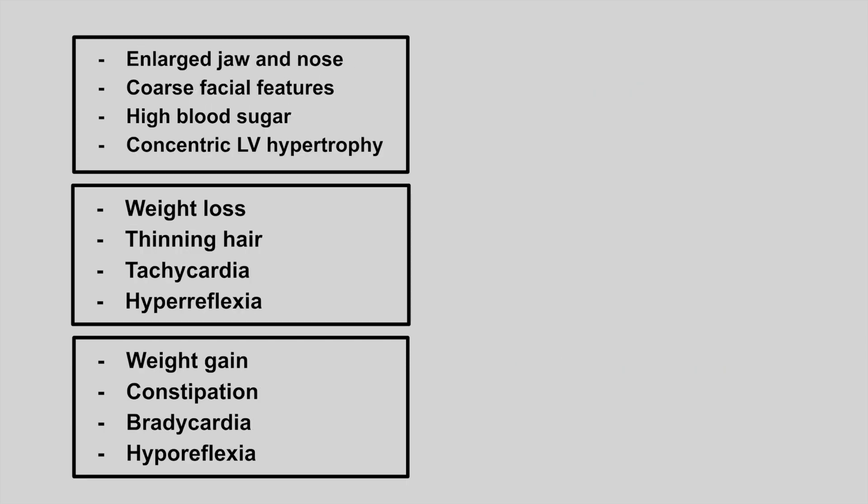The next patient has an enlarged jaw and nose, coarse facial features, high blood sugar, and concentric left ventricular hypertrophy. This is acromegaly, which happens due to too much growth hormone secretion. Remember, we measure IGF-1 levels for workup.